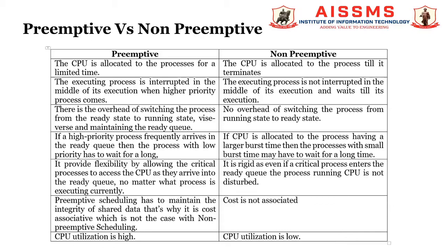Let's see the difference between primitive and non-primitive scheduling. In primitive scheduling, the CPU is allocated to the process for a limited amount of time, whereas in non-primitive scheduling the CPU is allocated till the process terminates. In primitive scheduling, the executing process is interrupted in the middle of execution when a higher priority process enters the ready queue, whereas in non-primitive scheduling the executing process is not interrupted and waits till its execution completes.